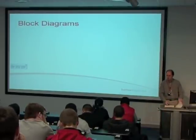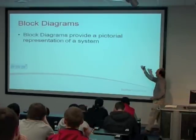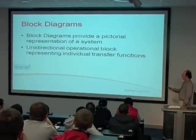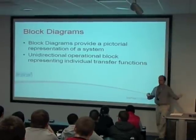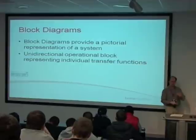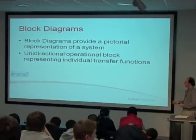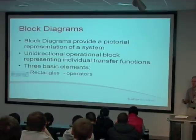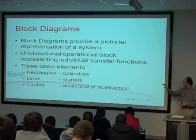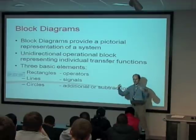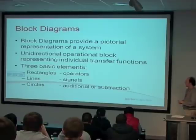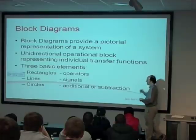Block diagrams. We've seen block diagrams before already, but basically a system can be represented using block diagrams - it's a pictorial representation of a control system. Generally you have these blocks which are unidirectional, so if something goes into the block, something comes out of the block. Each block represents a transfer function of some description - that could be as simple as just a gain, some value, or it could be a very complex transfer function. There are three basic elements: rectangles which are operators where the transfer function sits, lines connecting the blocks representing the signal, and circles which are summing junctions.